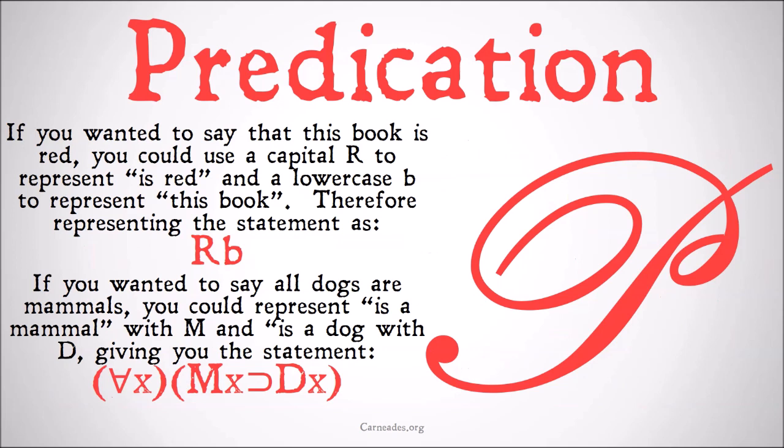For example, if you wanted to say that this book is read, you can use a capital R to represent 'is read' and a lowercase b to represent 'this book,' therefore representing the statement as Rb. Note that neither of these are in italics, which we're using to represent sets and classes, with capitals representing classes and lowercase representing sets in general.